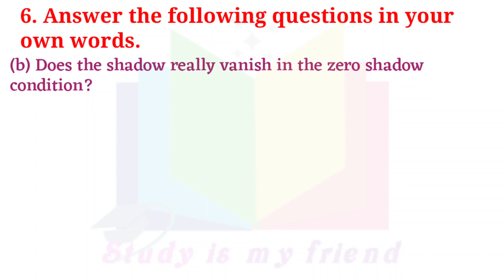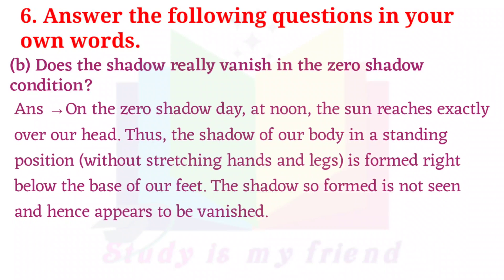B. Does the shadow really vanish in the zero shadow condition? Answer: On the zero shadow day at noon, the sun reaches exactly over our head. Thus, the shadow of our body in a standing position — meaning without stretching hands and legs — is formed right below the base of our feet. The shadow so formed is not seen and hence appears to have vanished.